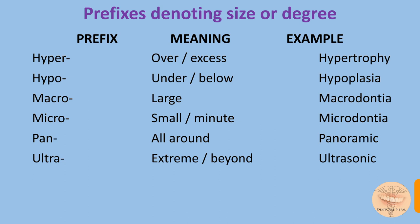Prefixes denoting size or degree: some prefixes like hyper, hypo, micro, macro, pan, and ultra all denote size or degree. 'Hyper' means over or excess; 'hypo' means under or below. 'Micro' means small or minute. 'Pan' means all — panoramic radiograph, panacea, which is the medicine that cures all diseases.